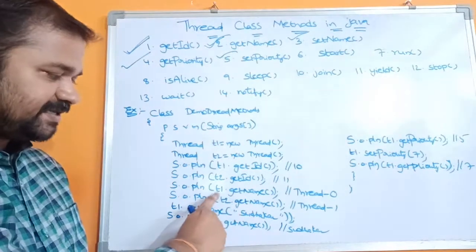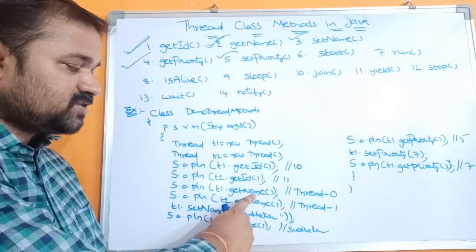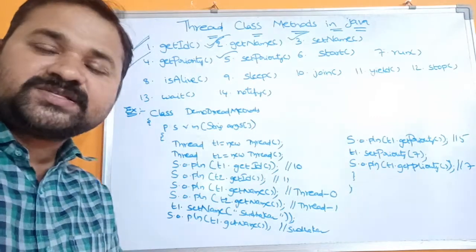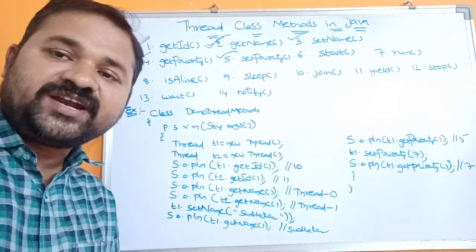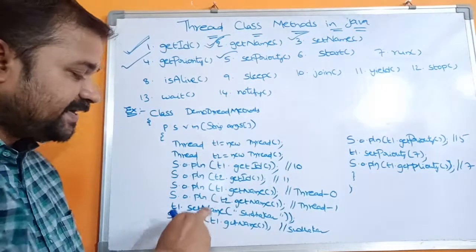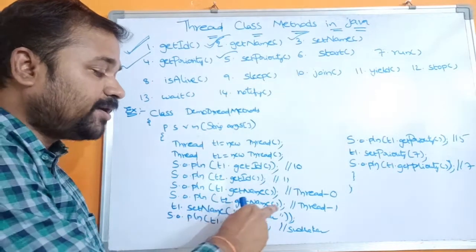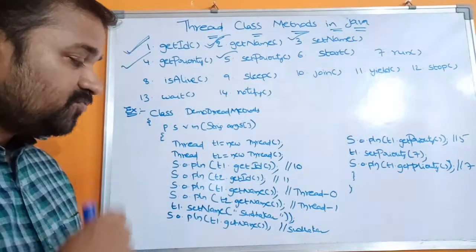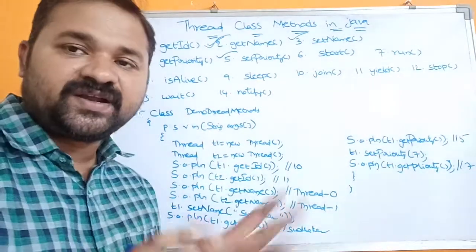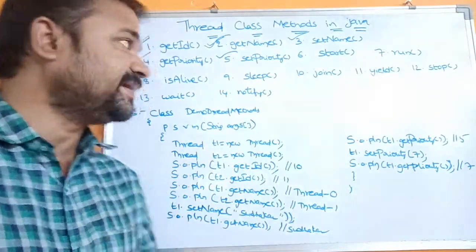Now let's see getName method. t1.getName() — getName returns the name of the thread. So for the first thread, what is the name? Thread-0. Next: System.out.println(t2.getName()). For the second thread, what is the name? Thread-1. So likewise the names will be assigned for the threads.